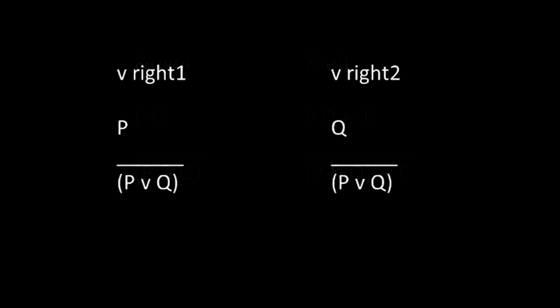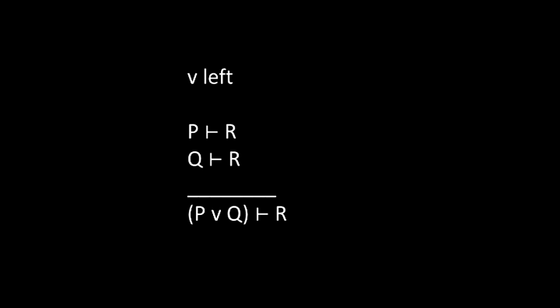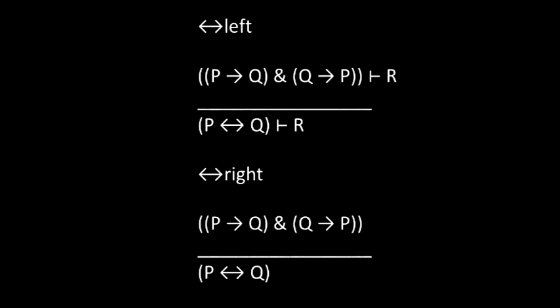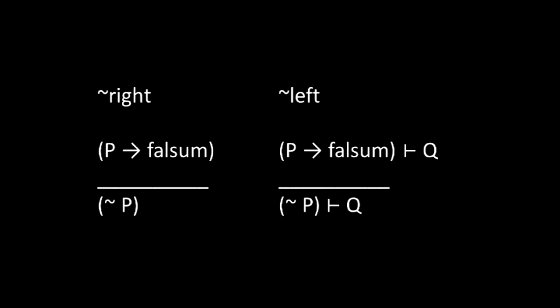Or-right-1 says that we can prove P or Q by proving P. Or-right-2 says we can prove P or Q by proving Q. And or-left is a proof by cases. And the next two rules explicate the meaning of two-way implication. The final rules define negation. Not-P is defined as P implies Falsam, where Falsam is any absurdity. For example, 1 equals 0.